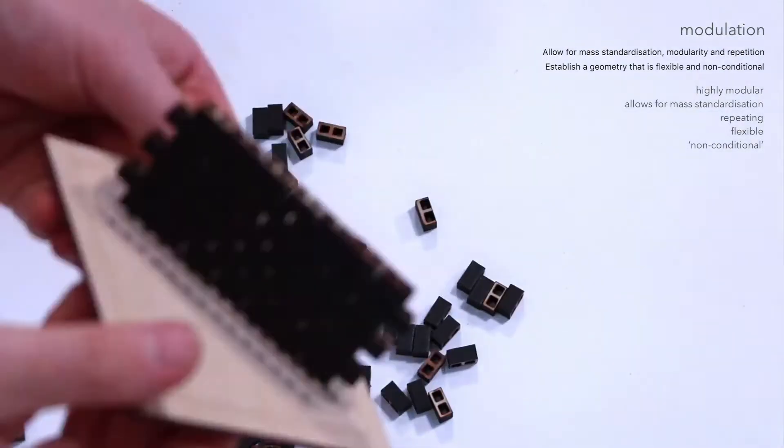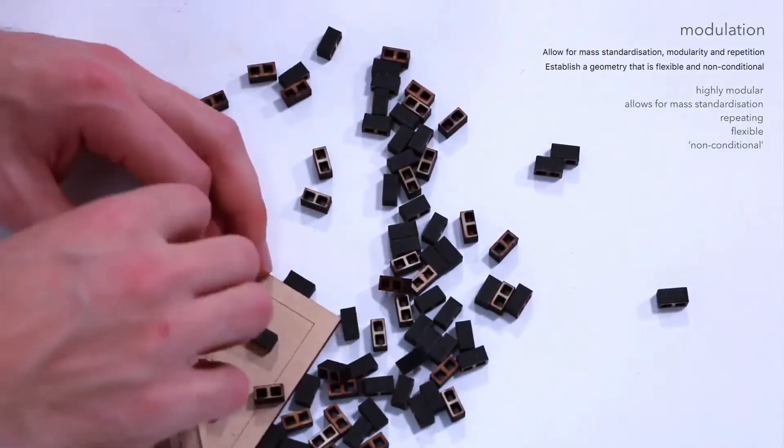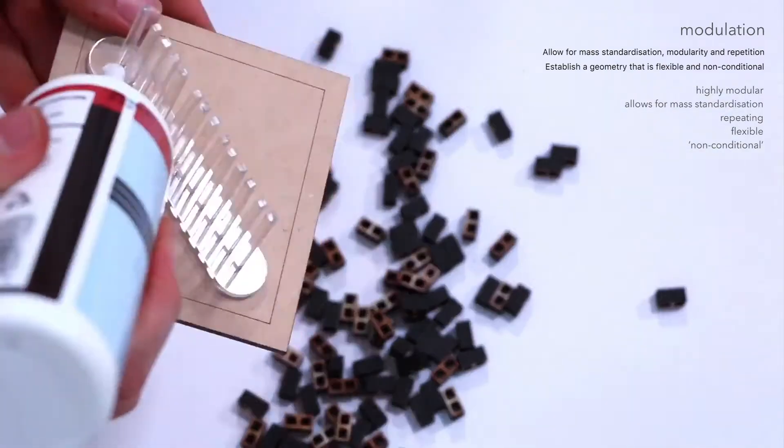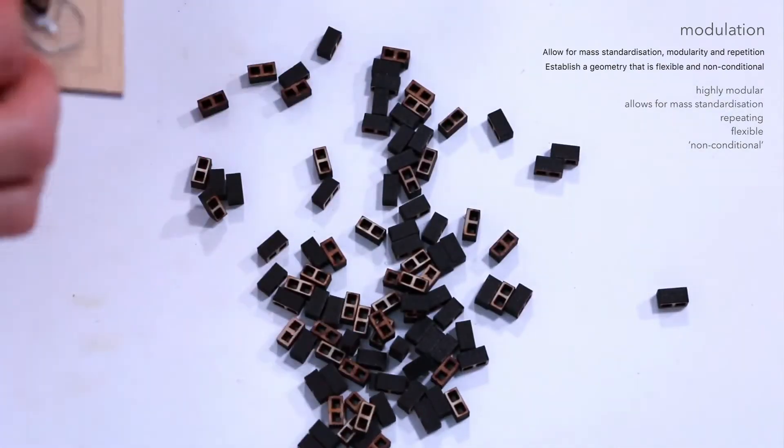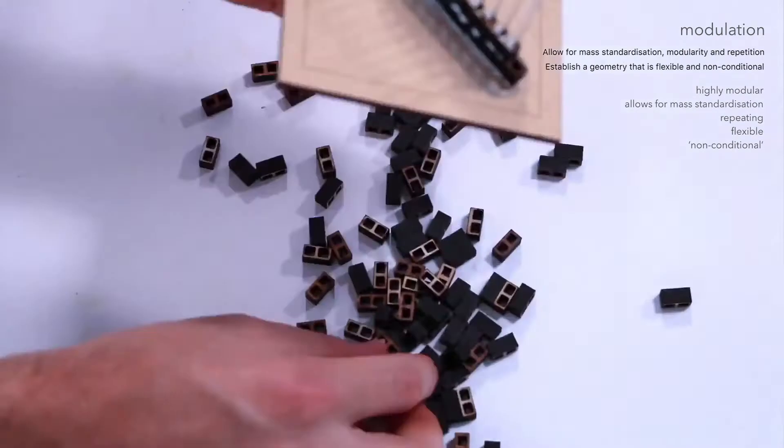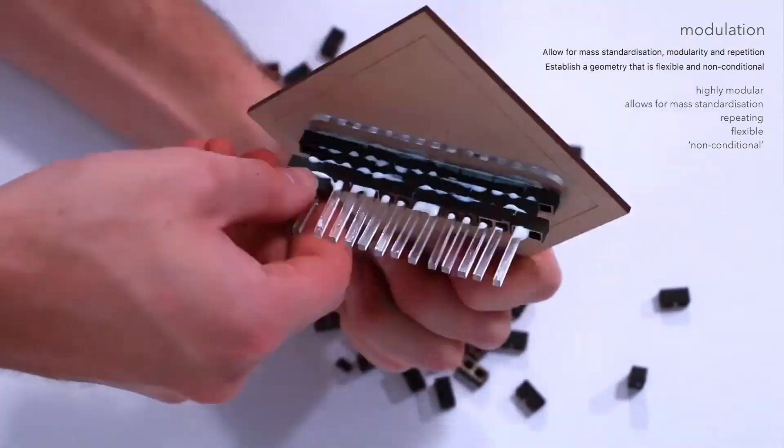Traditionally, these clay bricks were bound together by lime mortars, a material that is softer than the brick itself. Therefore, when the building that these bricks clad reached the end of its useful life, the bricks could be broken away from the mortar and directly reused.